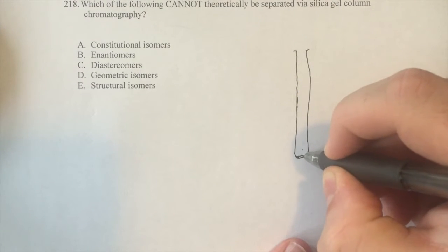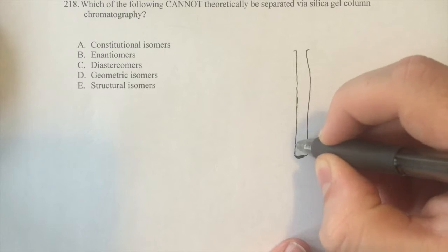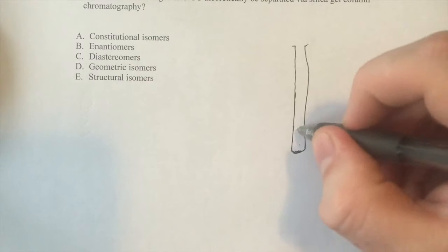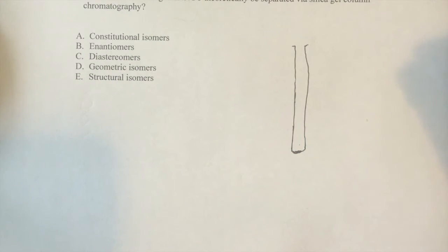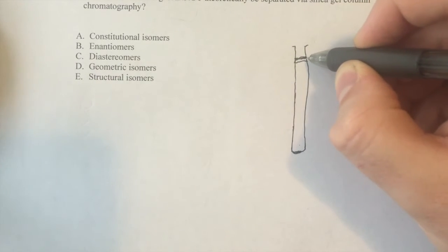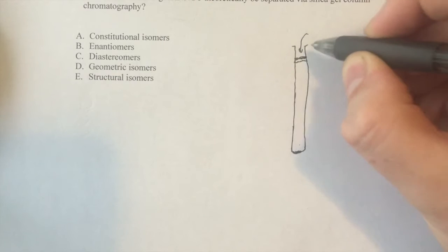And you basically fill it, there's usually a little bit of sand in the bottom, and then they fill it with this, they basically take silica gel and they mix it with whatever solvent you're going to use, and it makes this weird kind of slurry, it's like wet sand basically that goes in here, and then you add your compound, your reaction mixture at the top, and then you add more solvent.